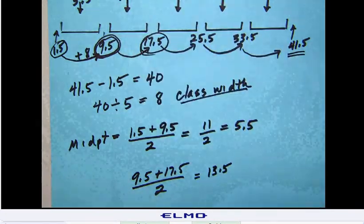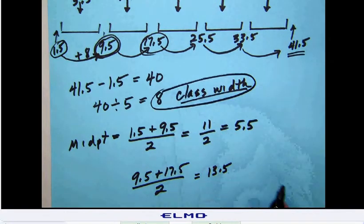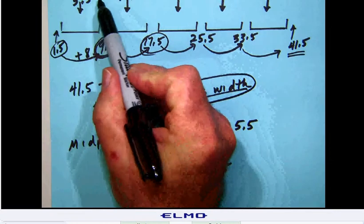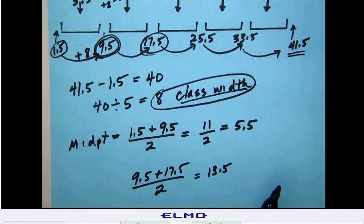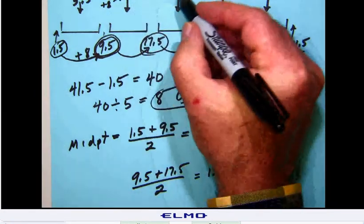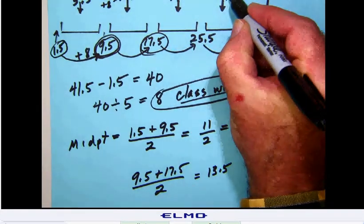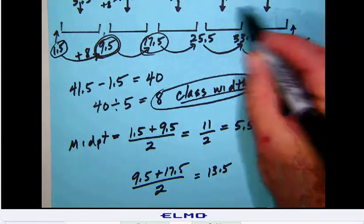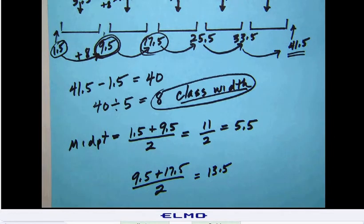Now, we could do that, but we're not going to. There's a shortcut. As you recall, the 8 was our class width. If you're at 5.5 and you add 8, you will get your 13.5. So 13.5 plus another 8 will give you 21.5, plus 8 is 29.5, plus 8 is 37.5. And so you can get all of those class midpoints in a flash.